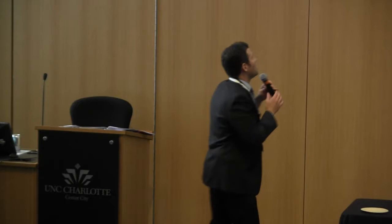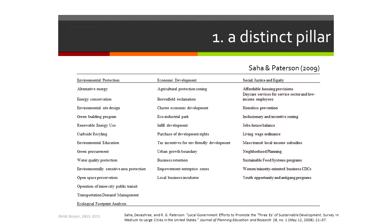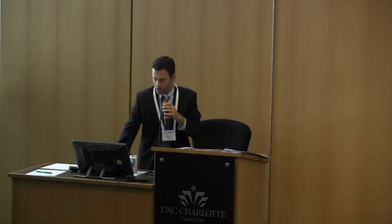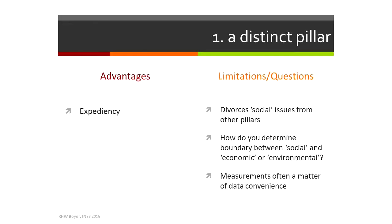Another major issue is determining where the boundaries lie. With Saha and Patterson, I could easily argue that sustainable food systems under social justice could easily be economic development, depending on for whom those systems are working. These boundaries are subjective — there's often no explication of how variables end up in different categories, and we're forced to trust whoever is making them. Also, if you don't have the right data, these categories are dependent on the data you have. For example, there's really no easy data source for social capital. So that's the distinct pillar.